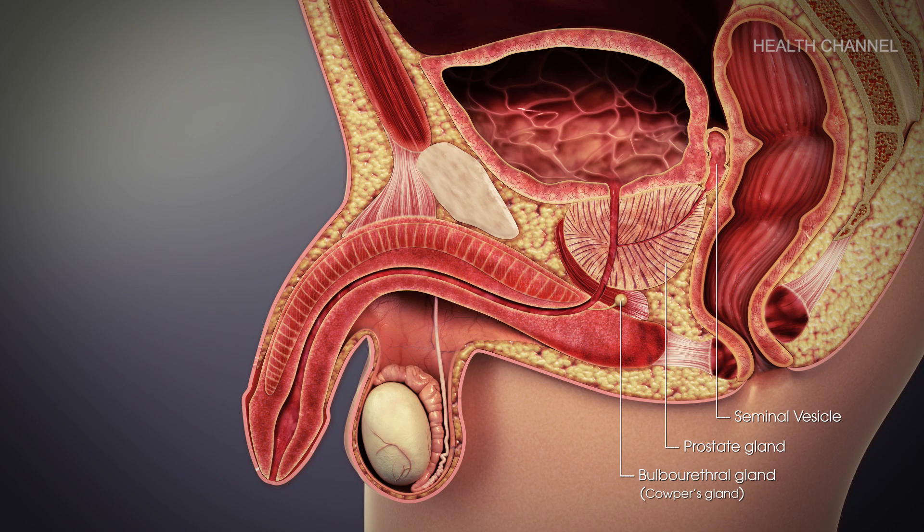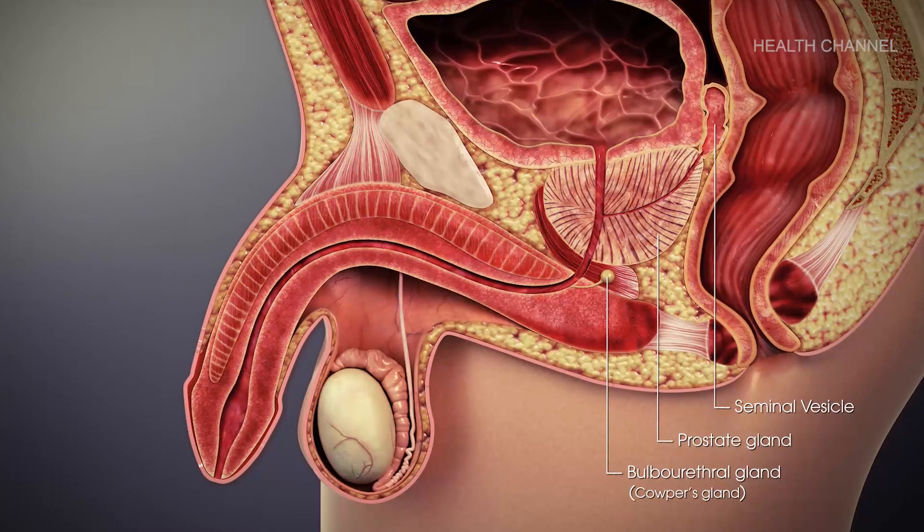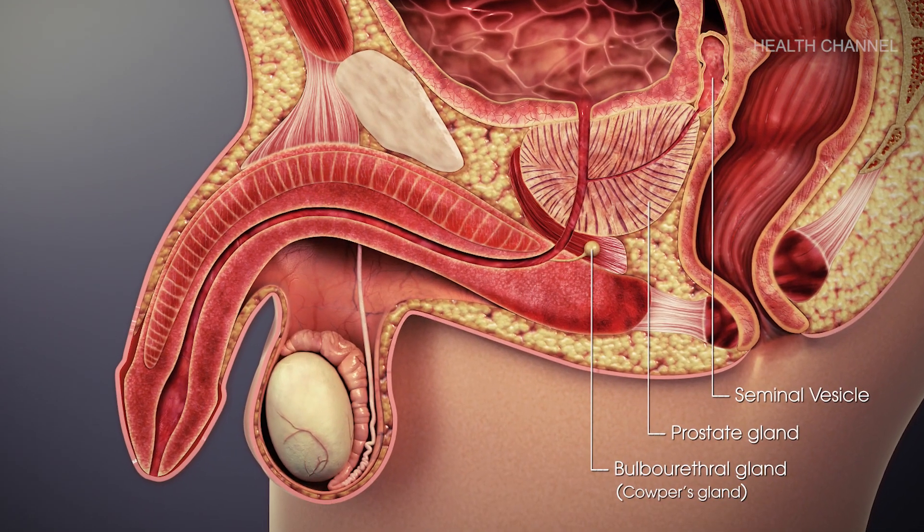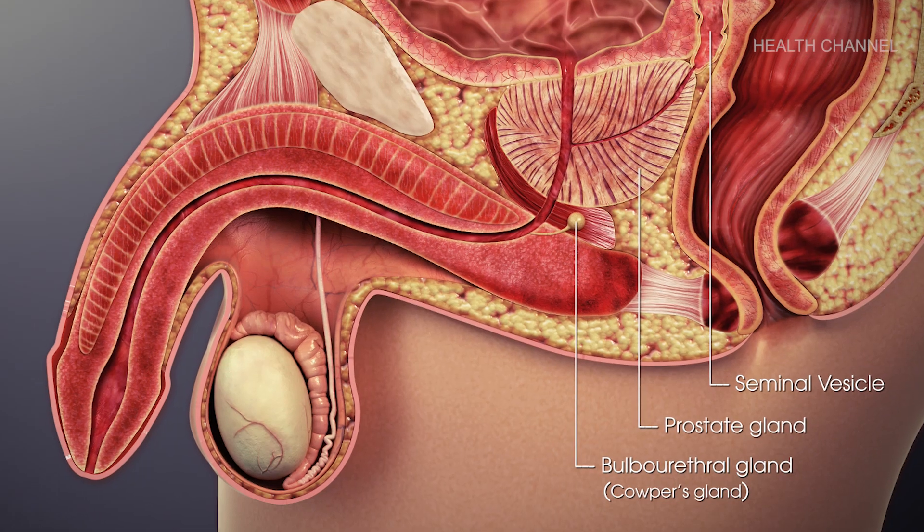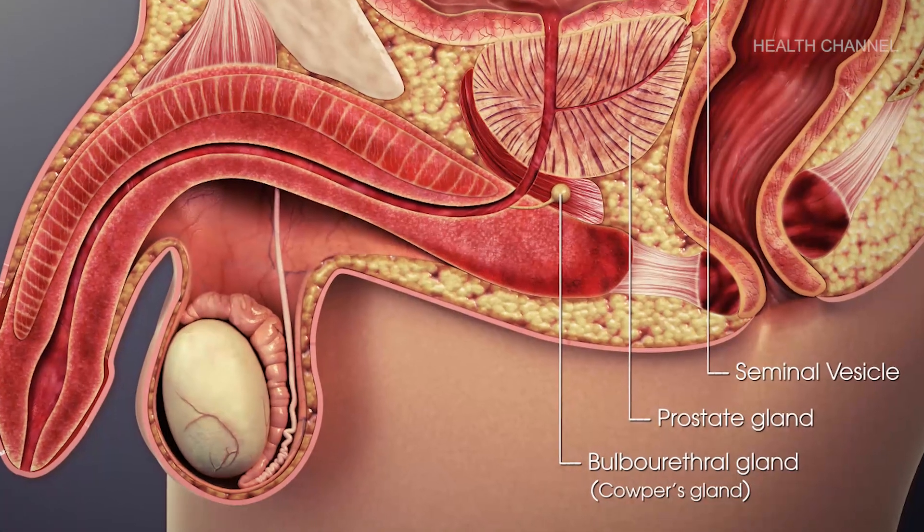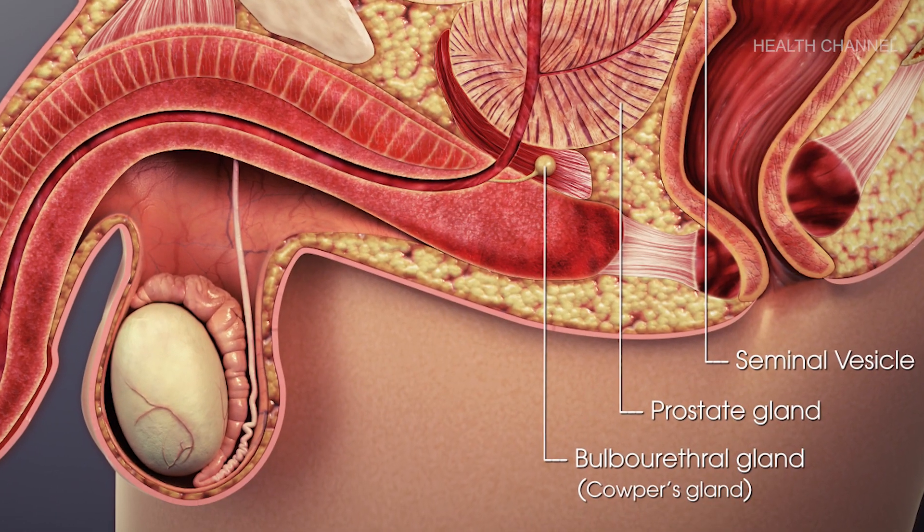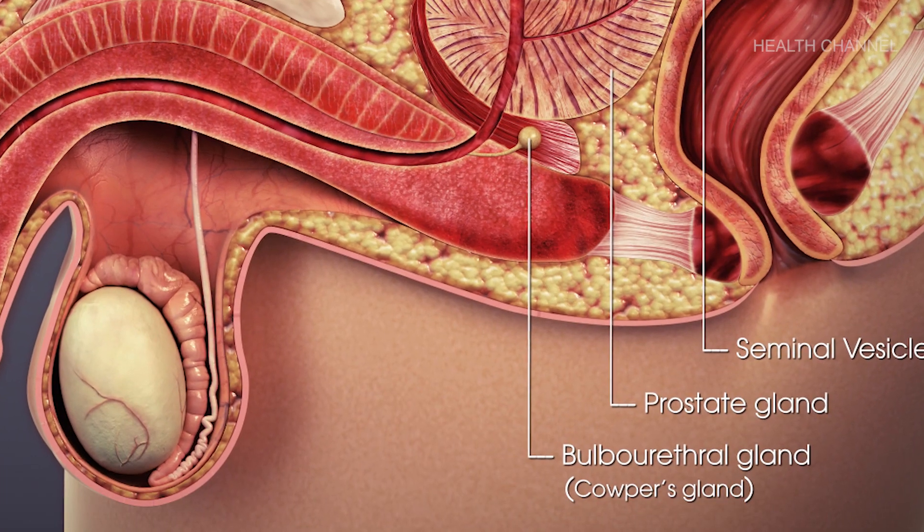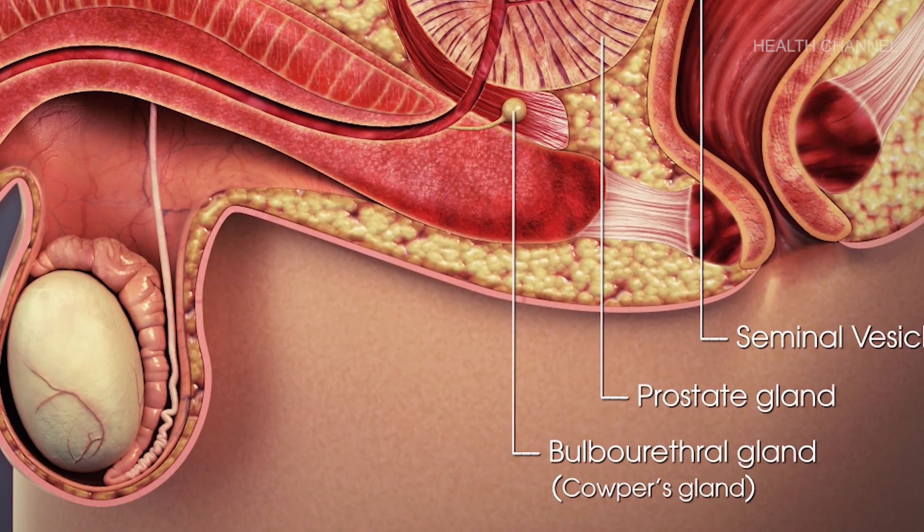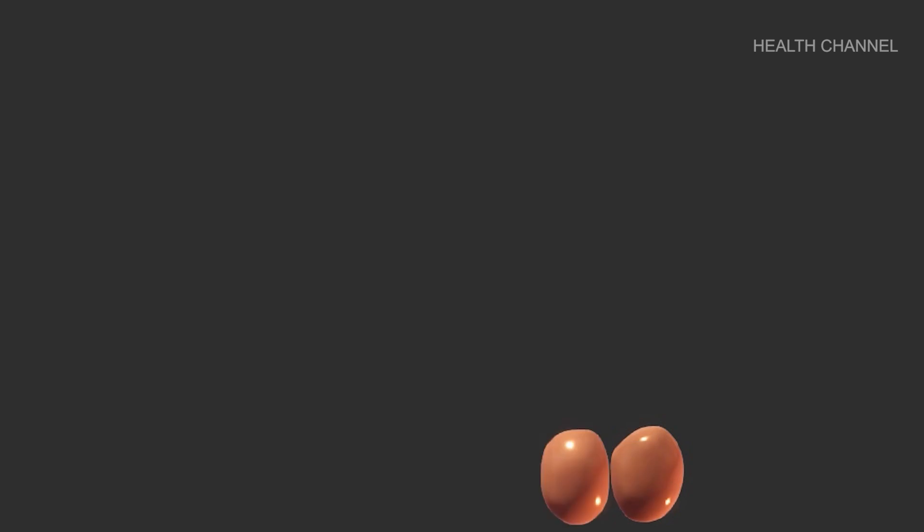Bulbourethral glands, also known as Cooper's glands, are pea-sized structures situated on the sidewalls of the urethra right below the prostate gland. These glands secrete a clear, slippery fluid that drains into the urethra. This fluid lubricates the urethra and neutralizes any acidity that may be present as a result of residual urine.